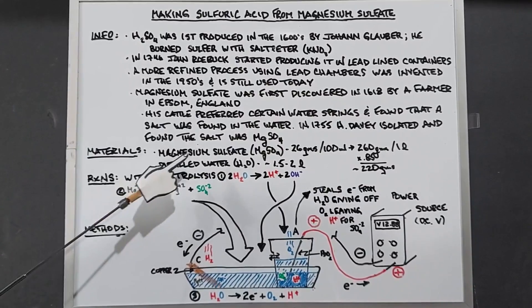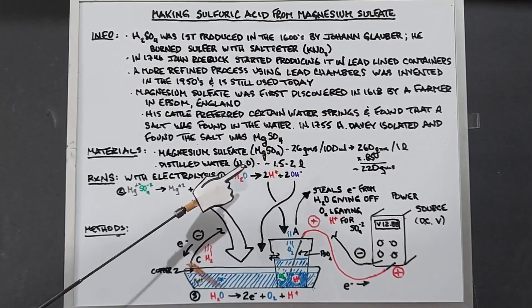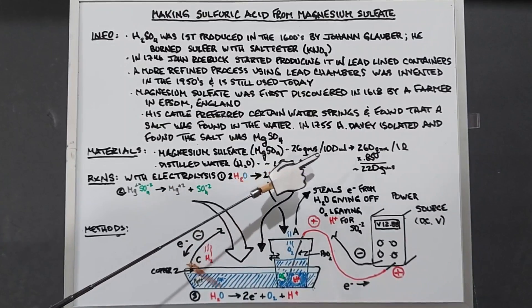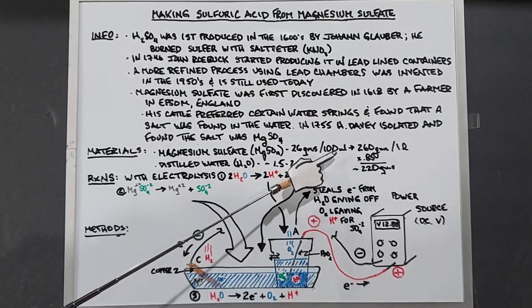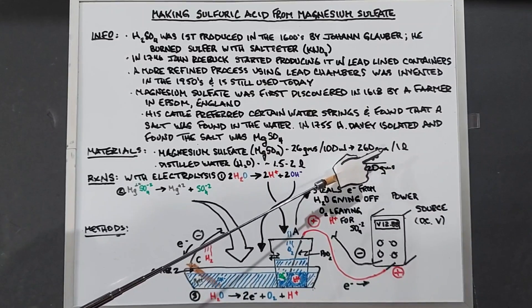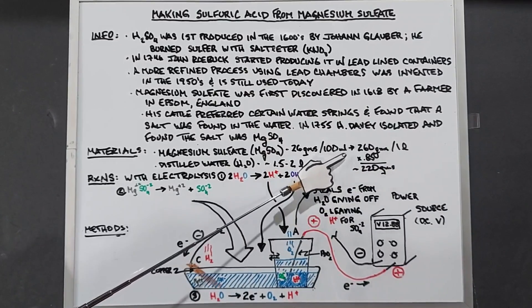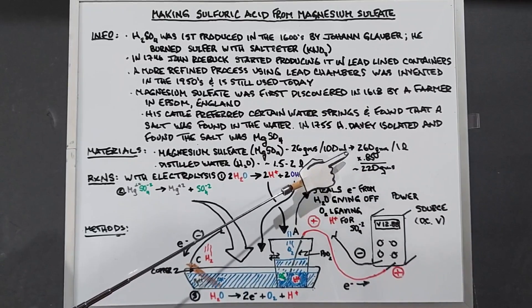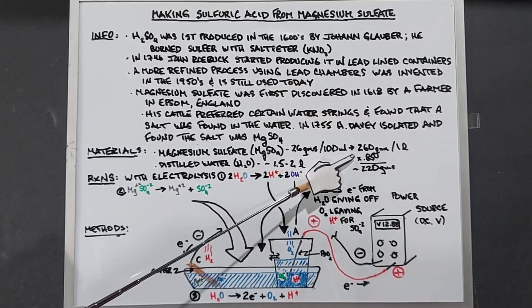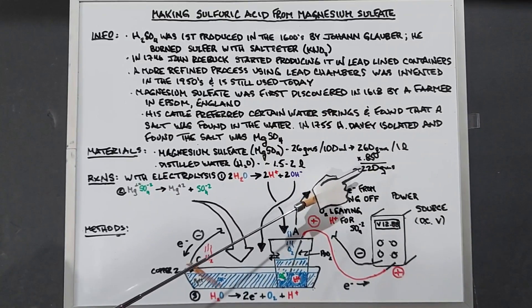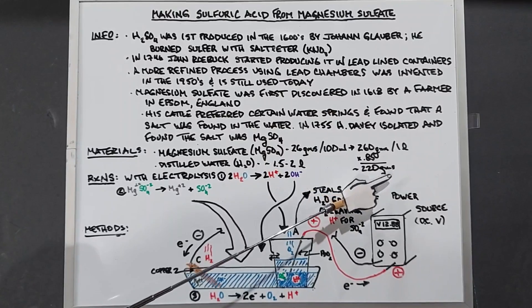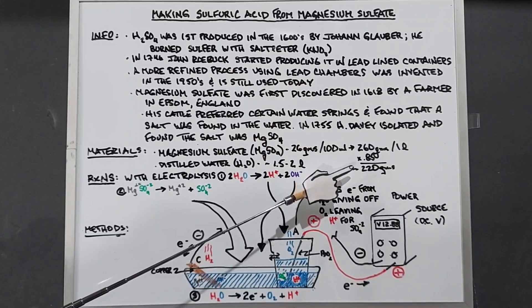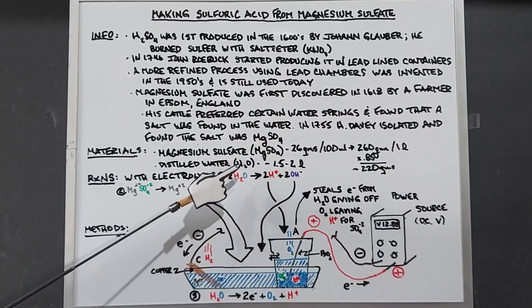For materials, we need magnesium sulfate and distilled water. That's it, very basic. Magnesium sulfate solubility in water is 26 grams per 100 milliliters, which multiplies to 260 grams per liter. But I found that a saturated solution doesn't work well for many experiments, so I'm reducing this by 15%. Multiplying 260 grams by 0.85, we get approximately 220 grams per liter.